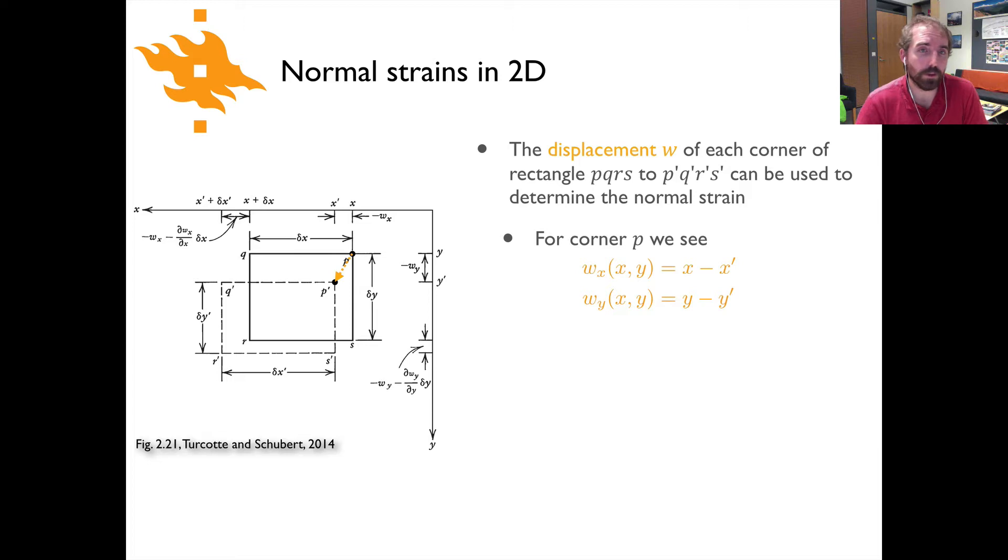What we're going to start by calculating are displacements of each corner of this rectangle, P, Q, R, S, the letters simply representing each corner of the rectangle. Displacements represented by the letter W, and the displacement that we're going to calculate is the displacement from its initial position, for instance P, to a final position P'. So for that corner P, we can see that the displacement along the x-axis would simply be the change from its initial position x to its final position x'.